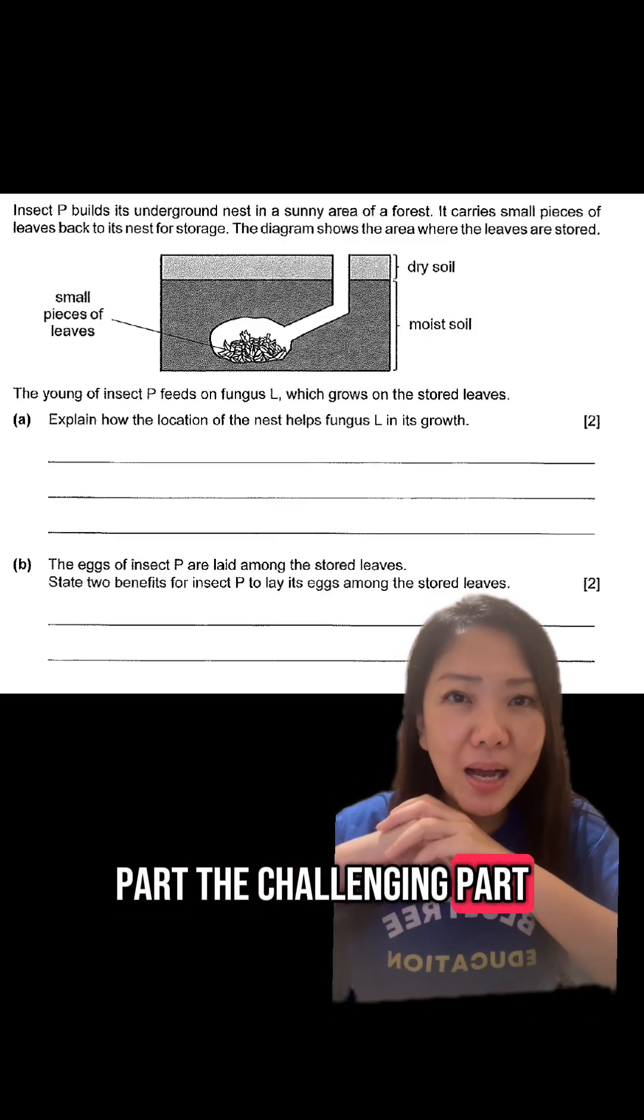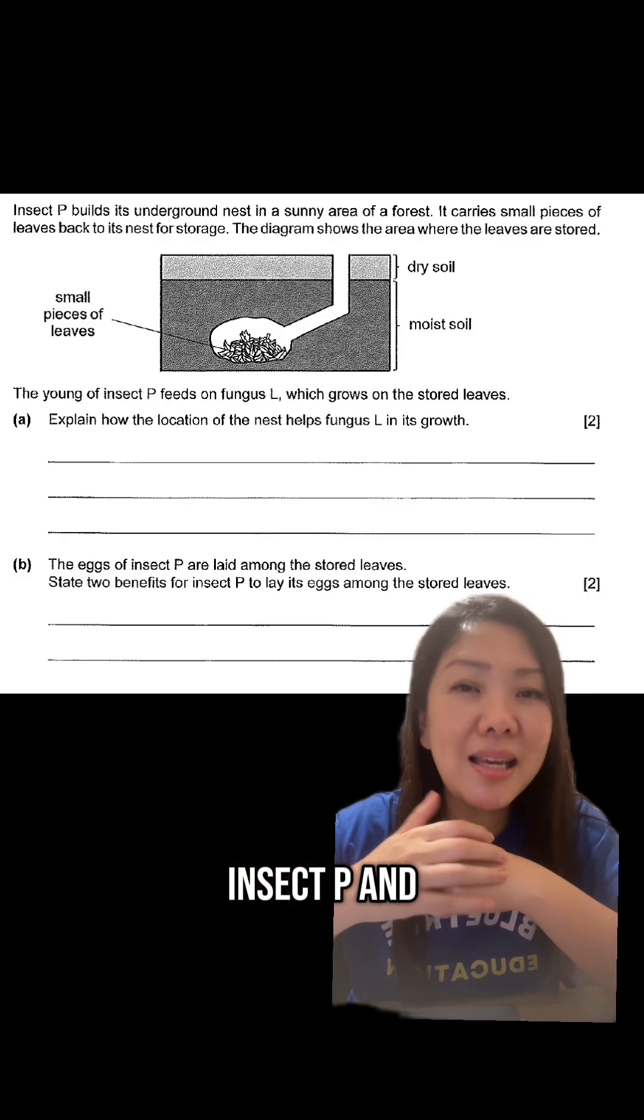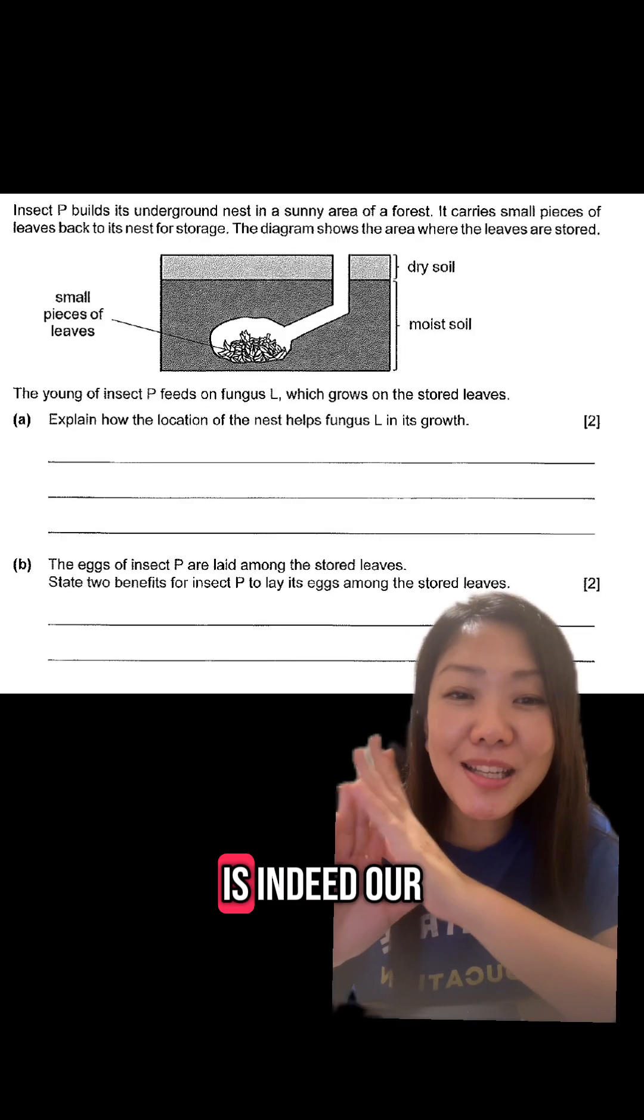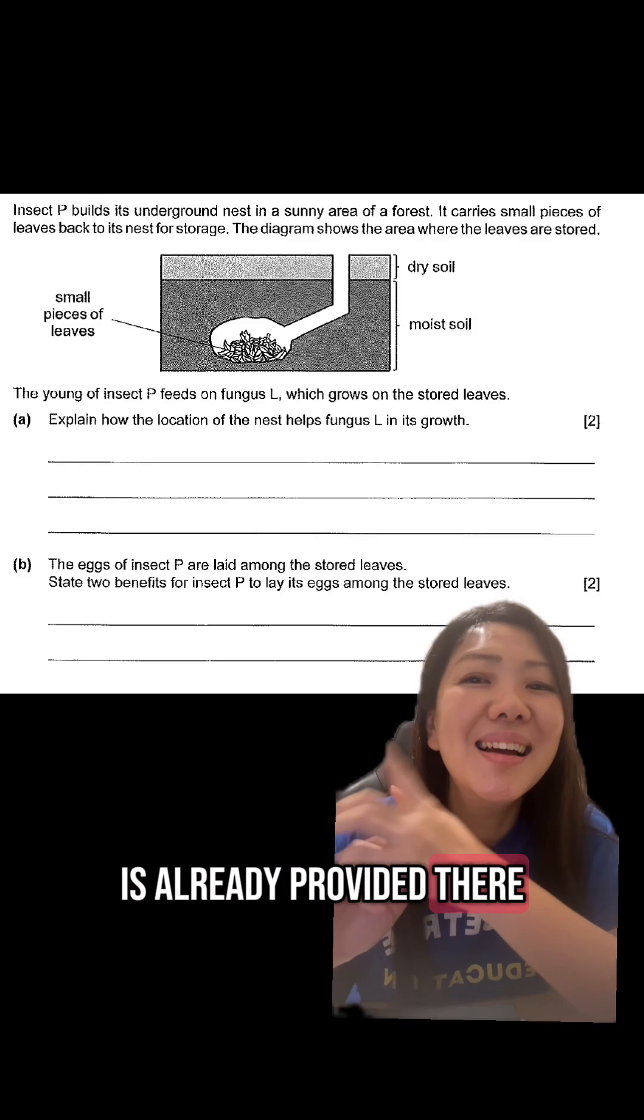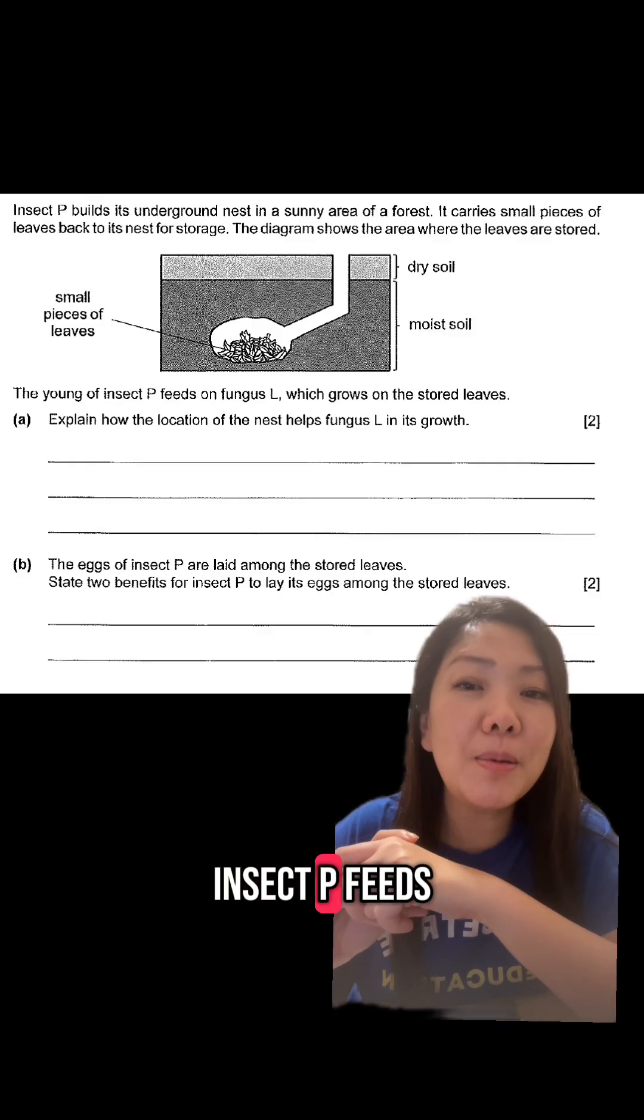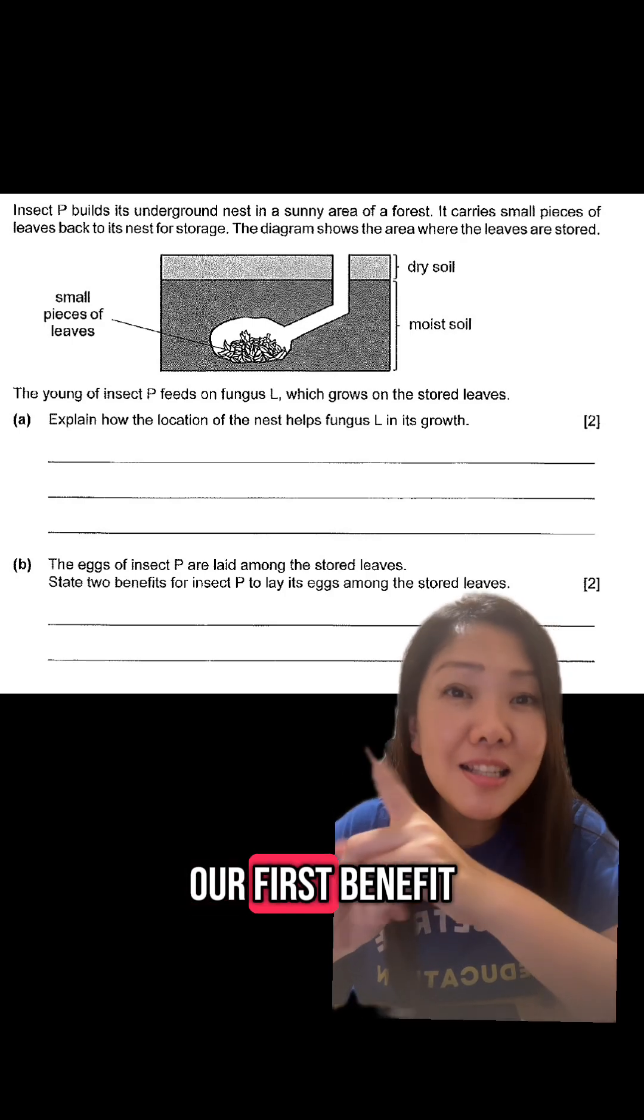For the second part, the challenging part is actually the food relationship between the young of insect P and the fungus. The question is indeed our best friend because the information is already provided there. It says that the young of insect P feeds on fungus L. So that is our first benefit.